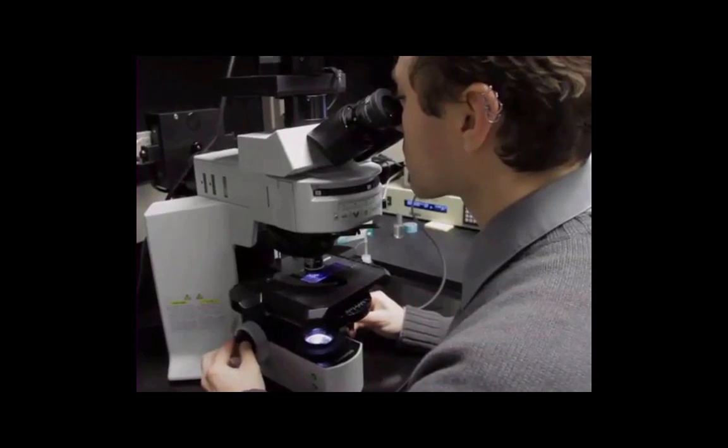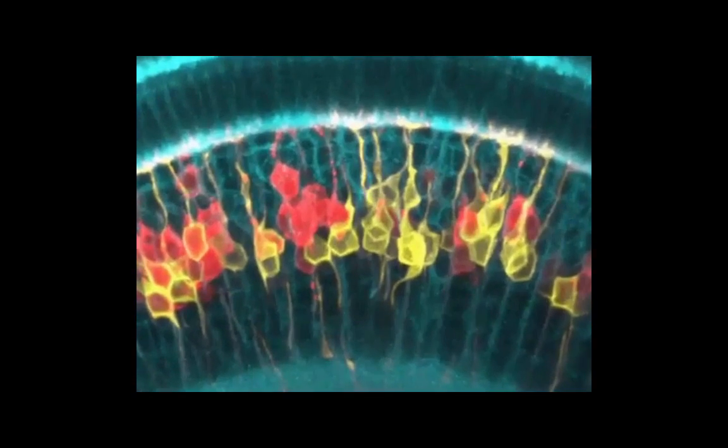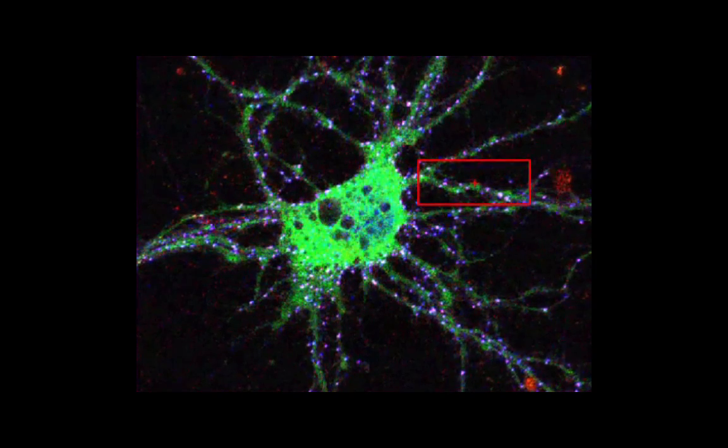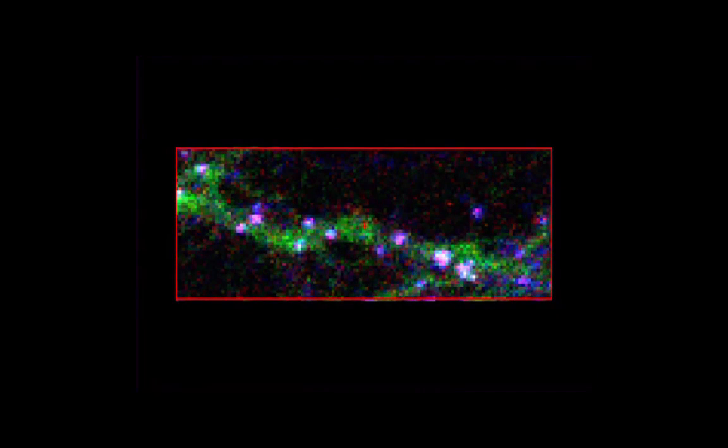The fluorescence light microscope allows for immunolabeled proteins to be imaged in tissue sections, or in culture, and permits co-localization studies, which involve determining whether or not two proteins are in close proximity within a single neuron.